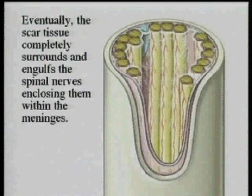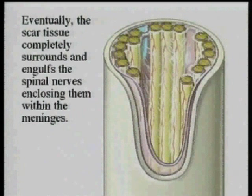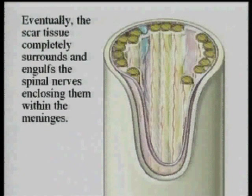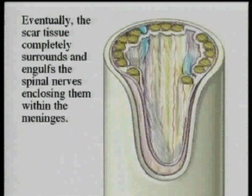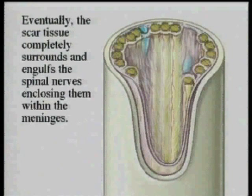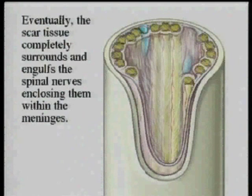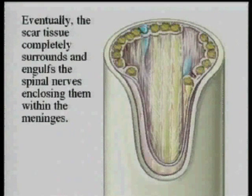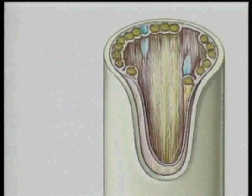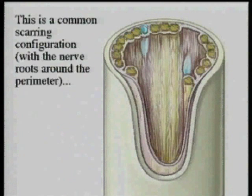As the scar tissue continues to be deposited, the nerves become more adherent to each other, and you will notice that they almost become part of the wall of the thecal sac. The thecal sac refers to the various layers of the dura and the arachnoid. The progression of scar tissue can be such that if one enters this dural cavity, one cannot recognize normal nerves.